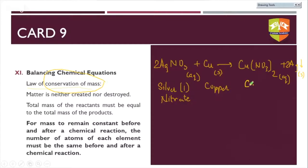Write the names: silver(I) nitrate, copper, copper(II) nitrate, and silver as a solid deposition. It is a good idea to mention the oxidation state as many times as possible — it gives a very clear idea to the reader of what compound is being discussed.